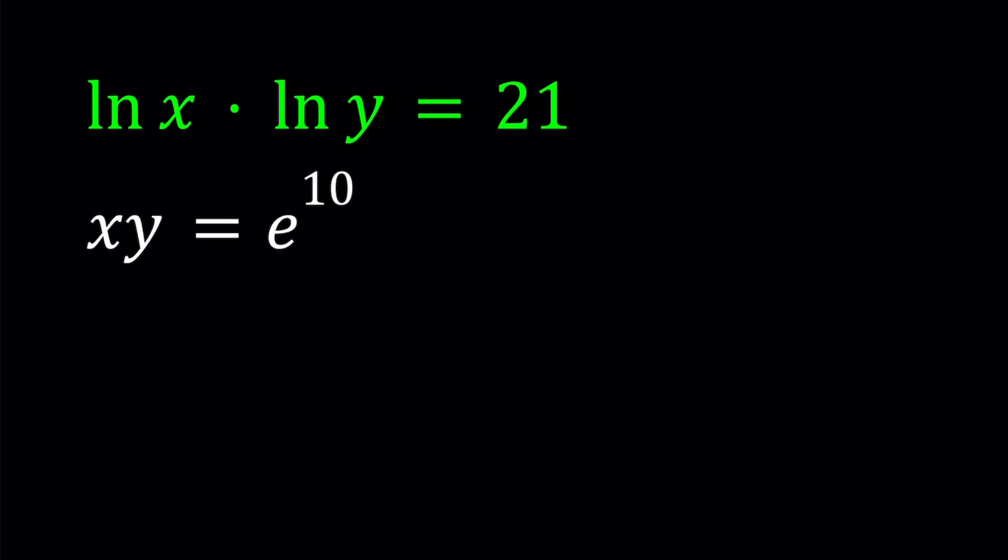Hello everyone. In this video, we're going to be solving a logarithmic system, maybe exponential system, or a mixture. So we have ln x times ln y equals 21, and xy equals e to the power 10, where e is the Euler's number. I'll be presenting two methods. Let's start with the first one.